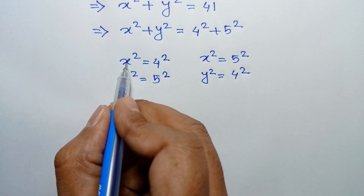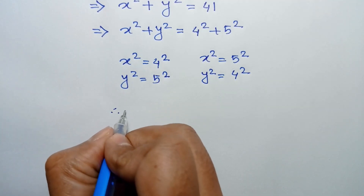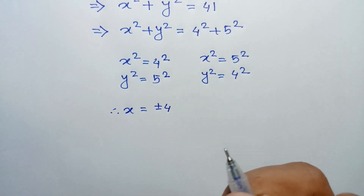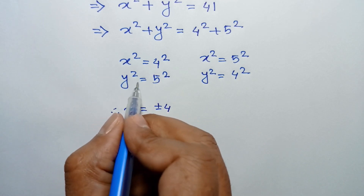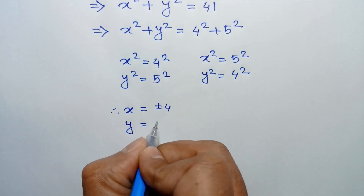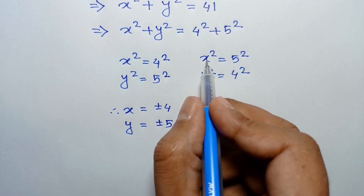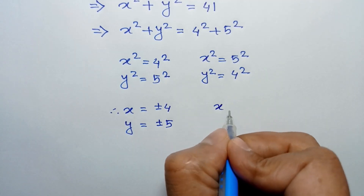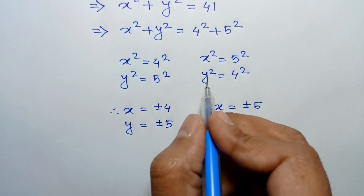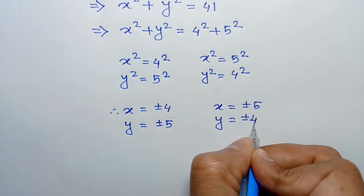Taking the square root of both sides, we get x equals plus or minus 4 and y equals plus or minus 5, or x equals plus or minus 5 and y equals plus or minus 4.